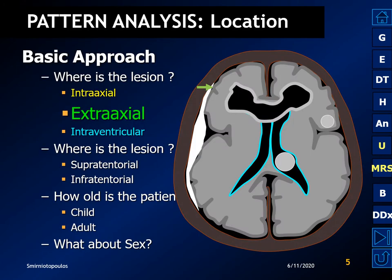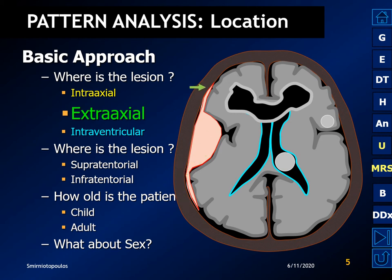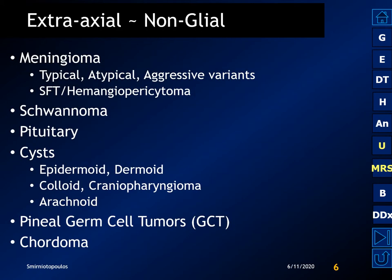We begin by documenting the location of the lesion. Is the lesion extra-axial or intra-axial? The most common extra-axial mass is going to be a meningioma — hemispheric, homogeneous, and broad-based on a dural surface.